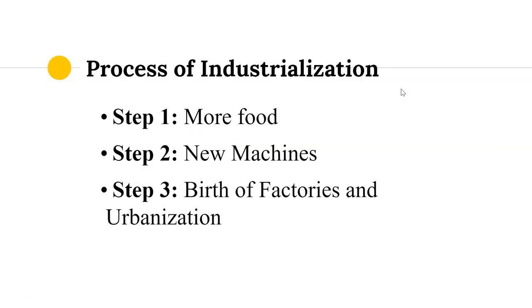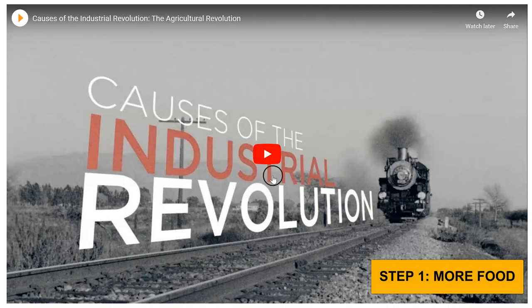Let's talk about the process of industrialization. There are three processes specifically: more food, new machines, and the birth of factories, and urbanization. Let's take a minute to watch this quick video that recaps the causes of the Industrial Revolution.